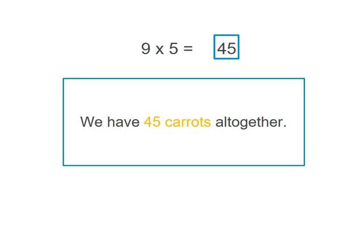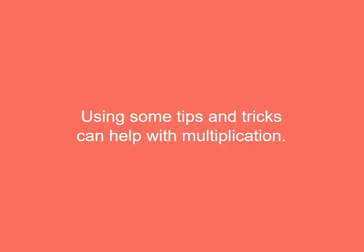So 9 multiplied by 5 equals 45. We have 45 carrots altogether. So we used multiplication but we also used a technique to help us with our 9 times tables. Using some tips and tricks can help you with your multiplication so it's always good to think of those.